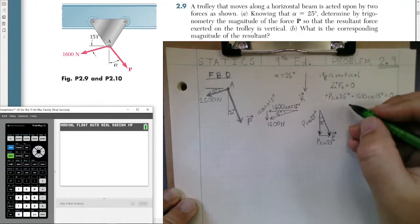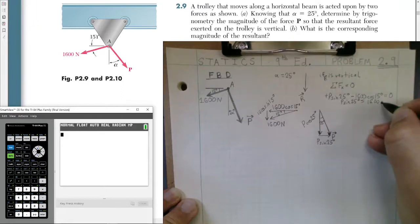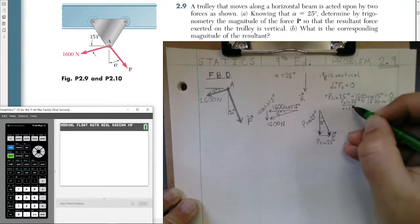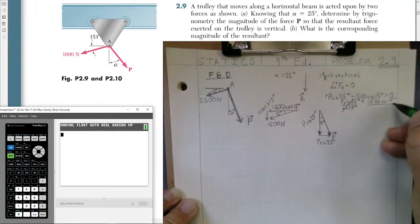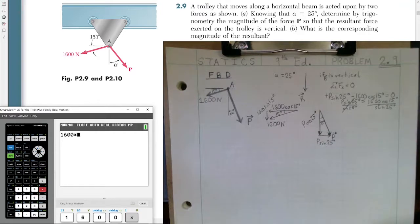So we can do a little algebra. We can go ahead and say P sine of 25 degrees. We move this force over to the right-hand side of the equation and it becomes positive. So we'll have positive 1600 cosine of 15 degrees. And then, if we divide both sides by the sine of 25 degrees, we can find the value of our P in the x component. So now I'll go to the calculator and type in 1600 times the cosine of 15 degrees, and then we divide that by the sine of 25 degrees.